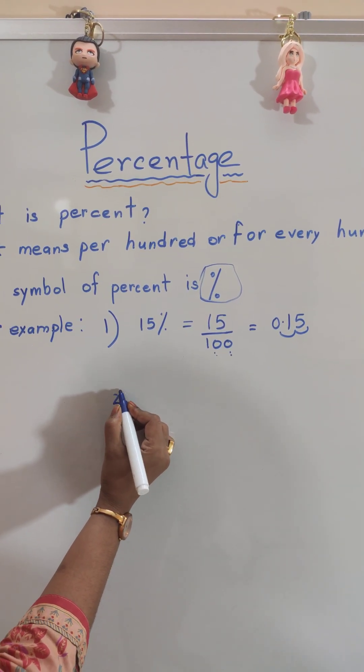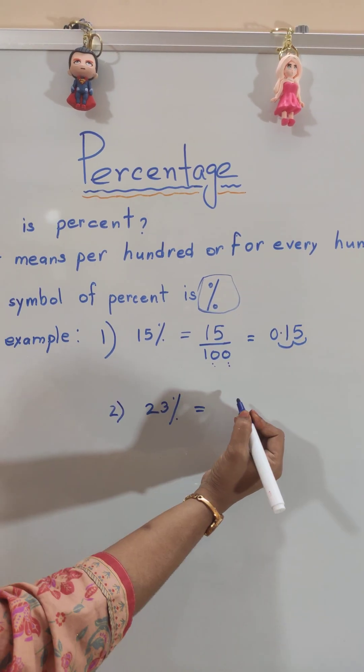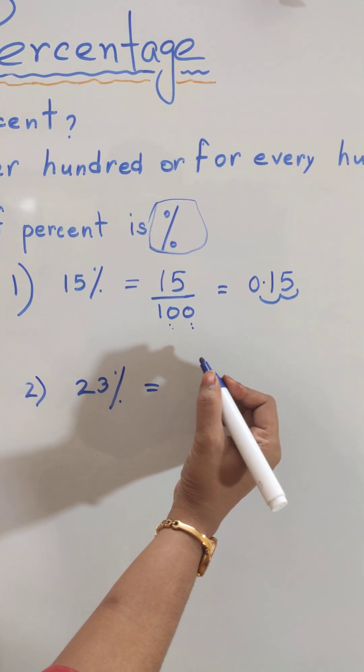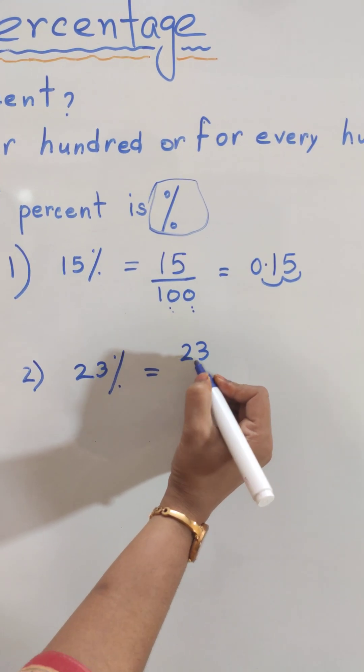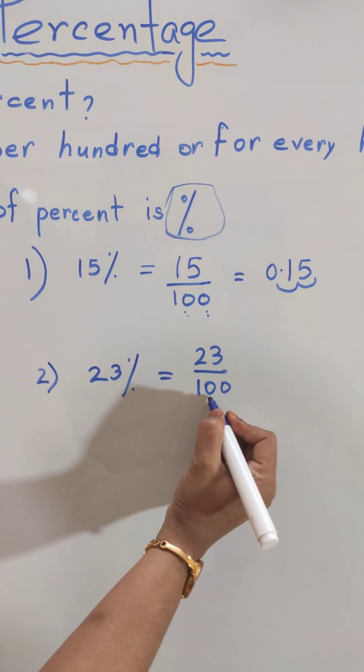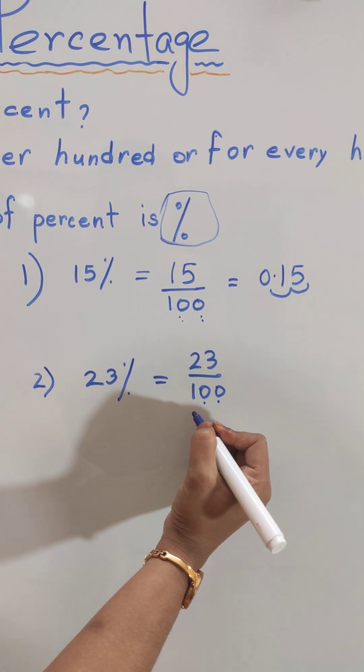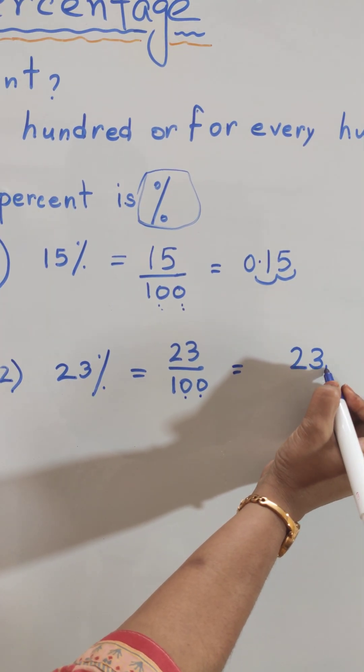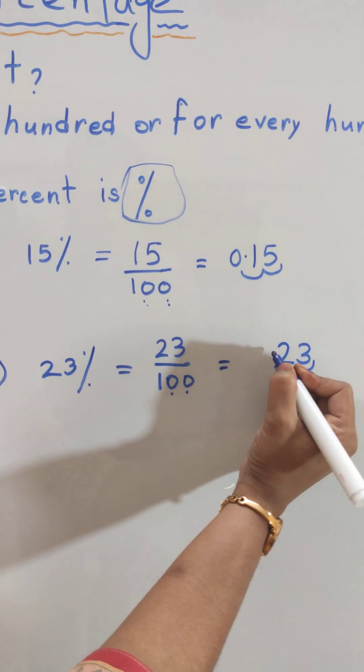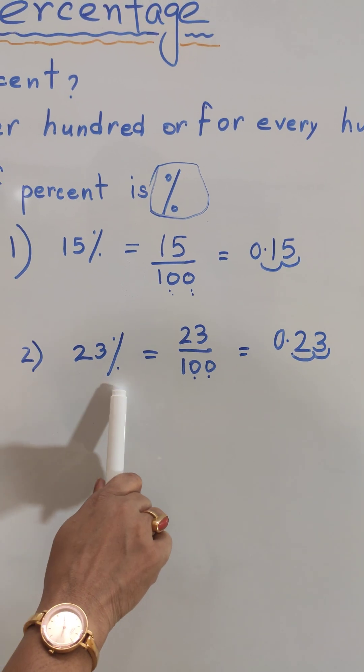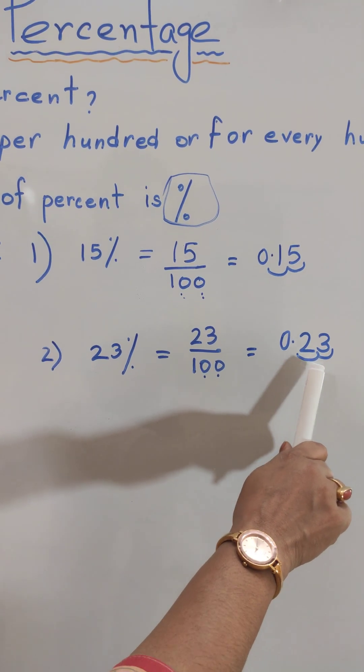Let me give you another example: 23%. We know percent means per hundred or for every hundred, so 23 by 100. Again we see two zeros. First we write 23, then move two places to the left. Point and give 0. Therefore 23% equals 0.23.